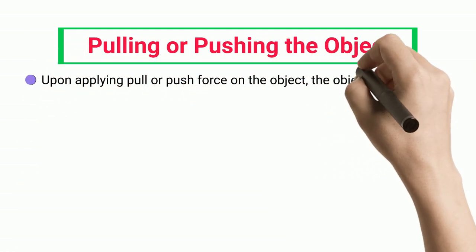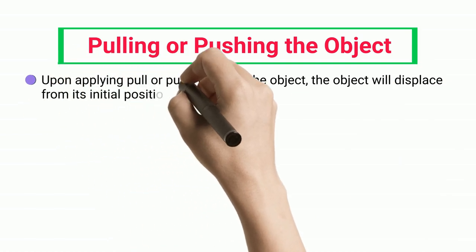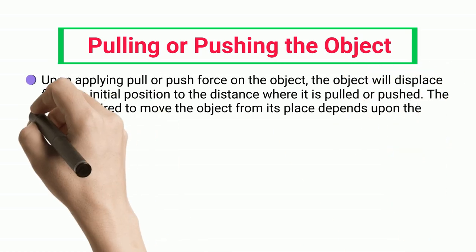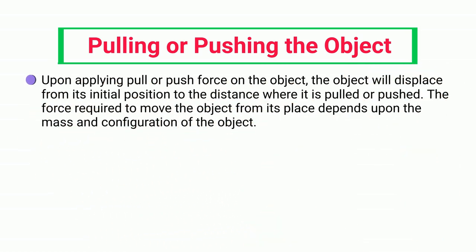Pulling or pushing the object: Upon applying pull or push force on the object, the object will displace from its initial position to the distance where it is pulled or pushed. The force required to move the object from its place depends upon the mass and configuration of the object.